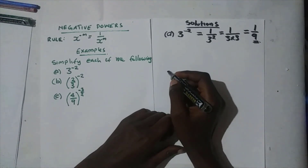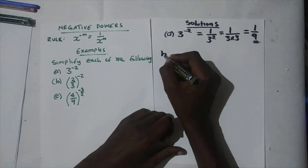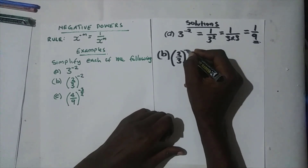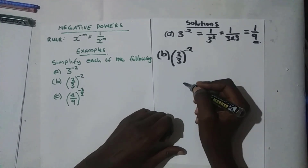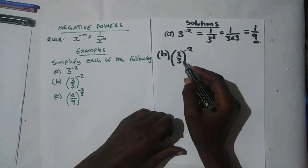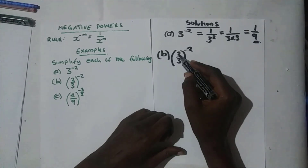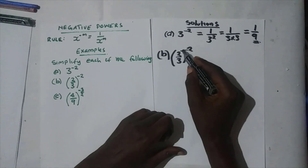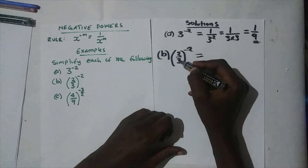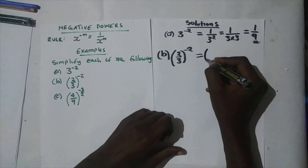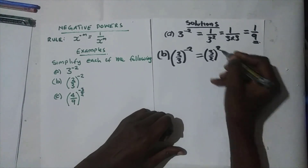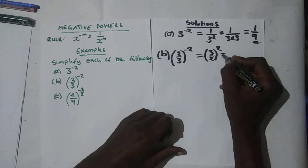The second example is two thirds, or two over three, to the power negative two. For this one, we have a fraction in the brackets. To change this power to a positive, all we do is interchange the two numbers — swap them — so we are going to have three over two, and the power will change to a positive.